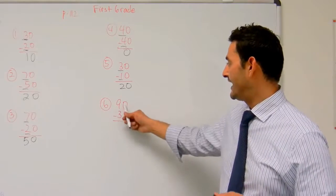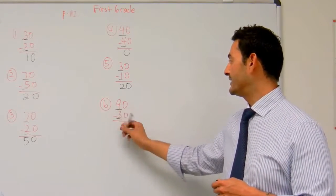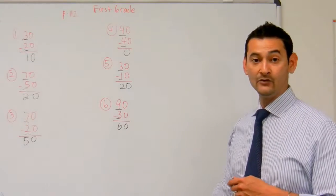And finally, number 6, we have 90 minus 30. Look at the tens place. 9 minus 3 equals 6. 90 minus 30 equals 60.